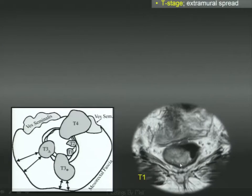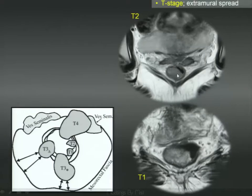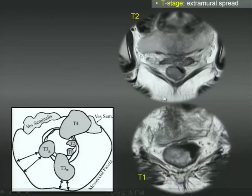Here is a T1 cancer essentially confined to the lumen. Here is T2. With MR it's very difficult to distinguish these two, and as mentioned, both are surgical candidates, so there is no clinical importance in making that distinction or spending time on it.